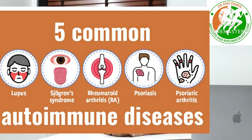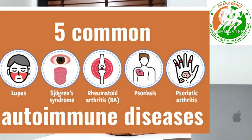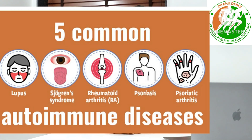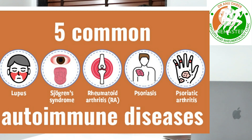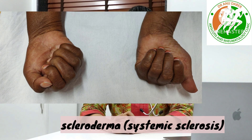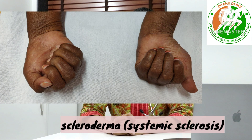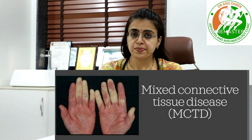Some could be there just in the joints, and some could involve the internal organs. Some examples are rheumatoid arthritis, lupus, scleroderma — where the skin tightens and becomes like hard leather — and MCTD.